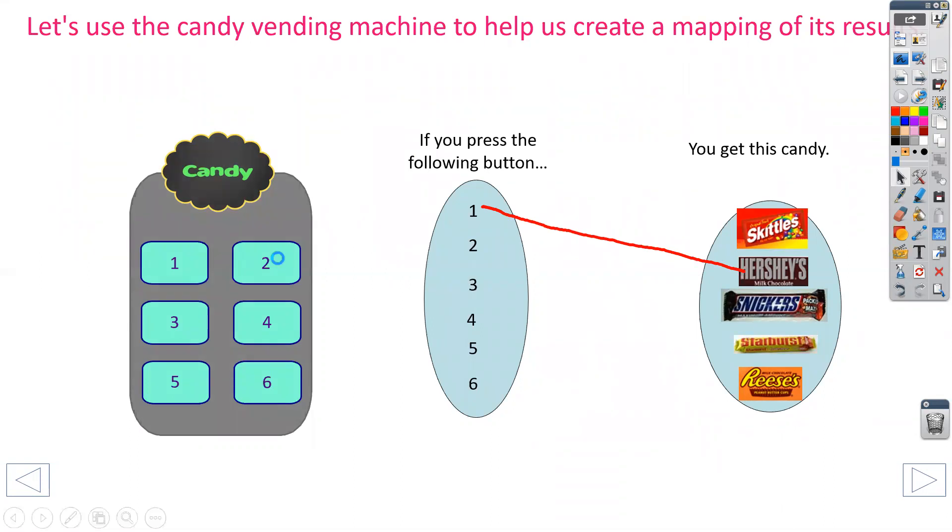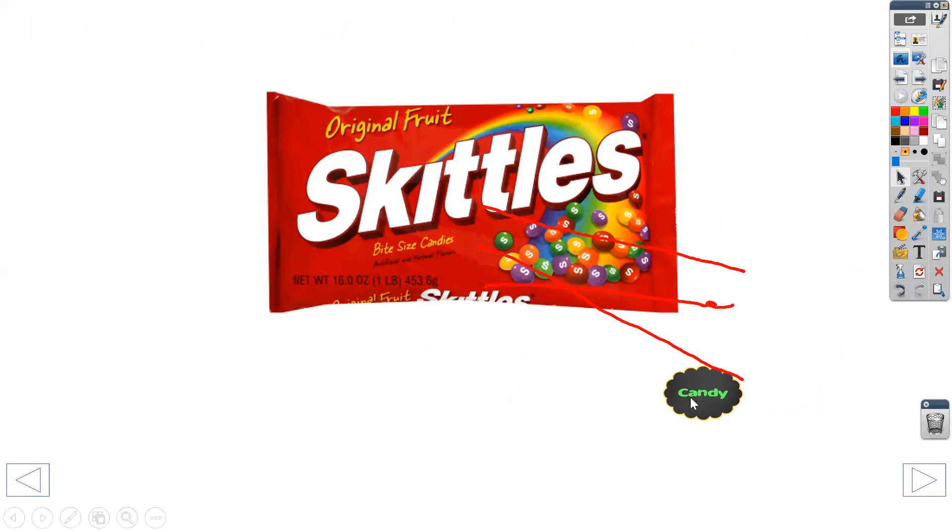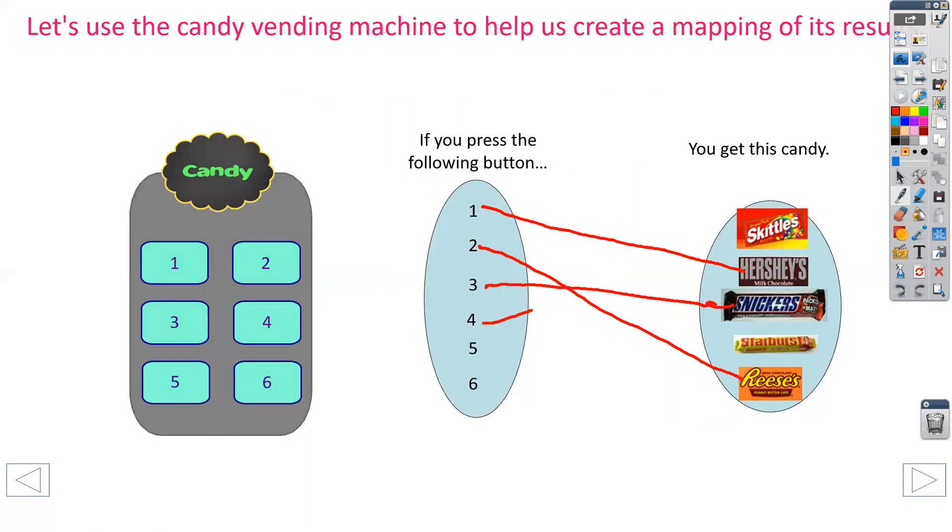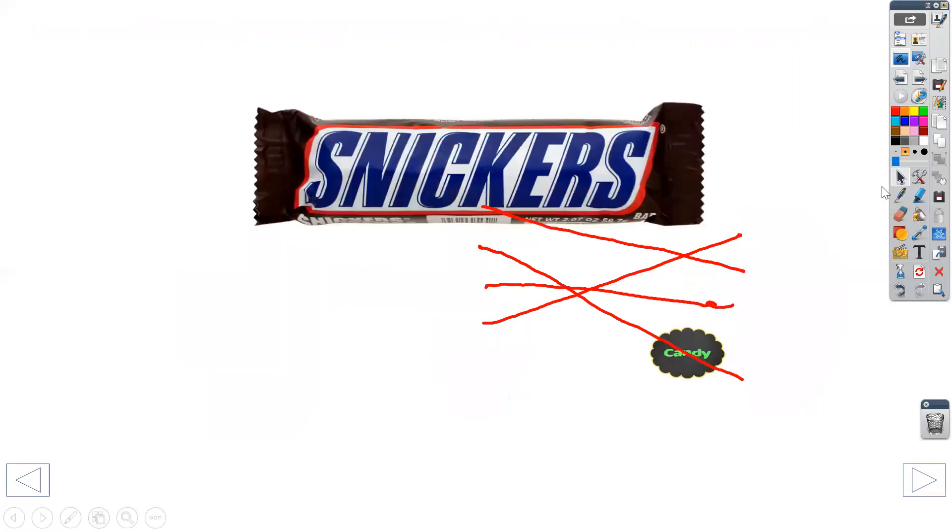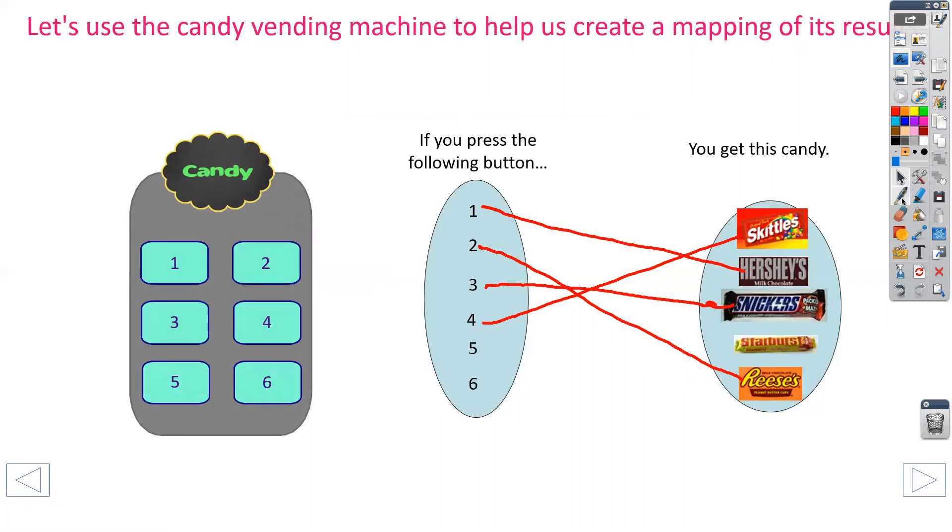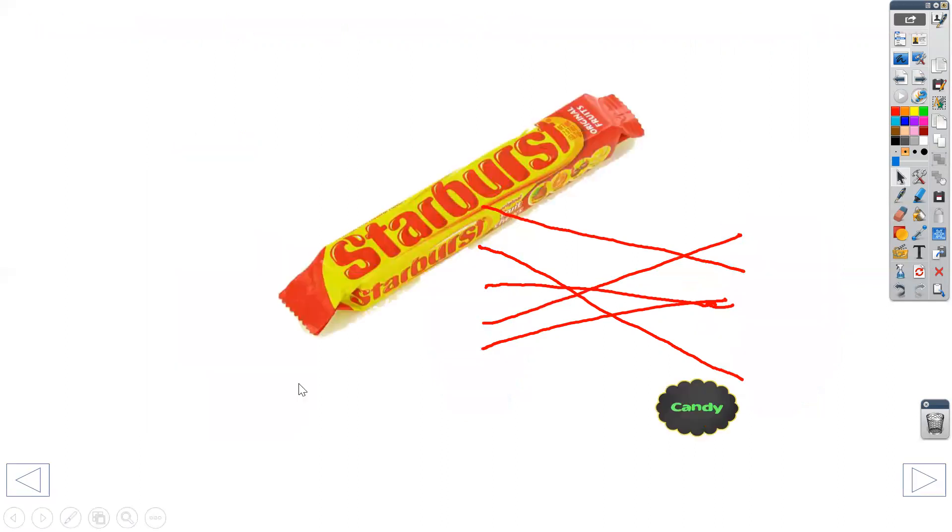Same thing for number two was Reese's. So I'm going to draw a line number two down to the Reese's. Three Snickers. Three is a Snickers. Four was Skittles. All right, number five is Snickers again. And lastly, number six is Starburst.